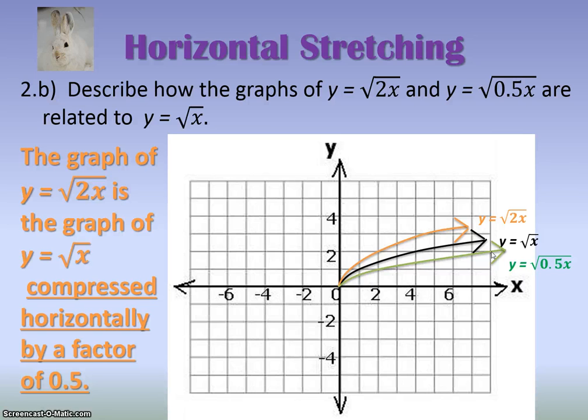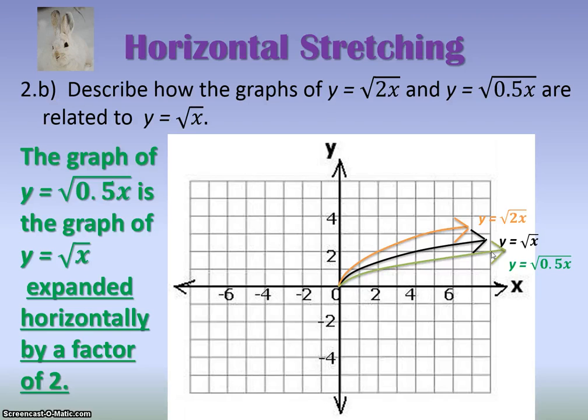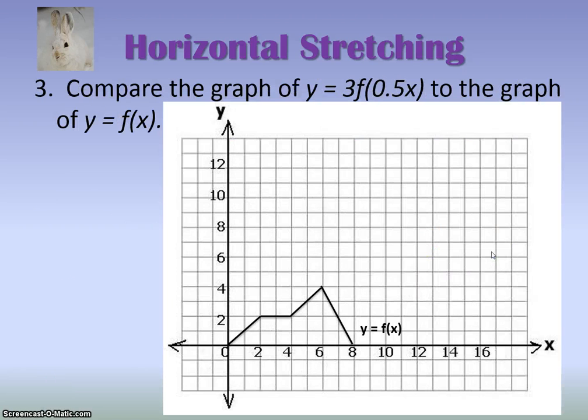And this is just reiterating what we just talked about. Here's a combination type of question. Now that we've looked at verticals and horizontals. Since this is outside the f(x), that's a vertical stretch by a factor of 3. Since this 0.5 is inside the brackets, it's a horizontal stretch by a factor of 2.